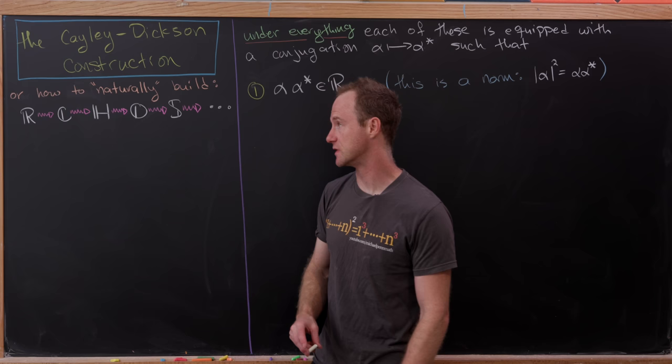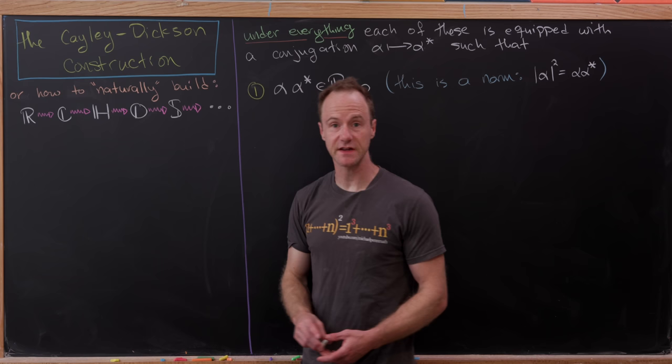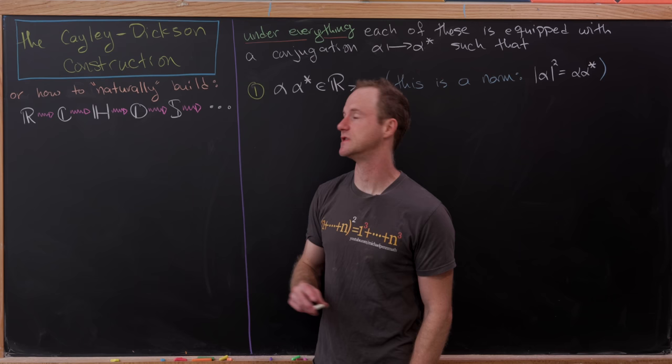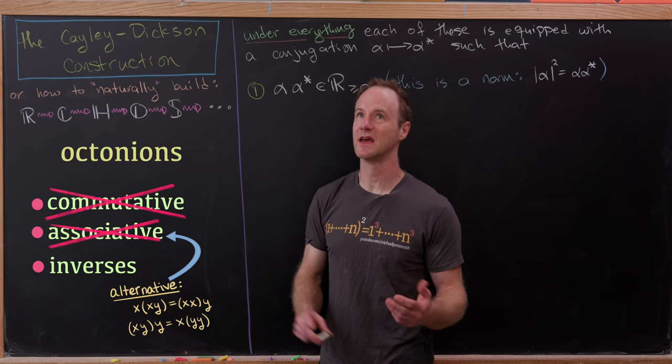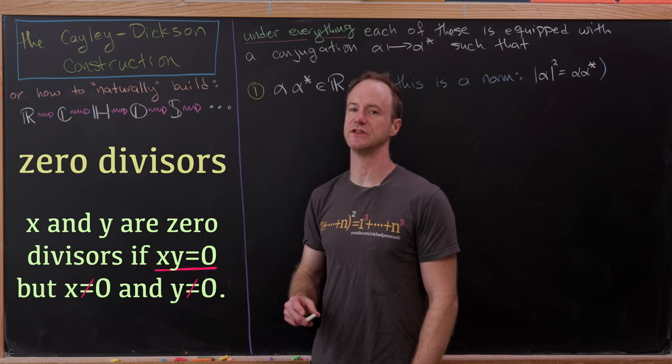Some of you may be familiar with these algebras. It's known that the complex numbers form a field — that is, it's commutative and associative, and everything has inverses and so on and so forth. The quaternions are something called a division ring, which is essentially a non-commutative field, but it's still associative. It's well known that the octonions are non-associative, but they are alternative, which is as close to associative as you can get without being associative. Here everything has an inverse, and there are no zero divisors.